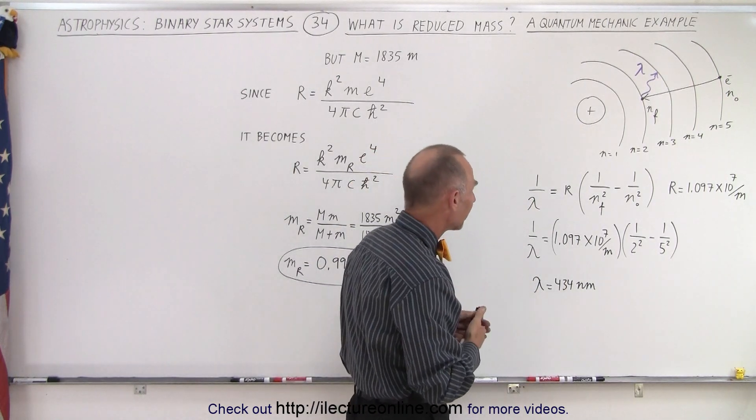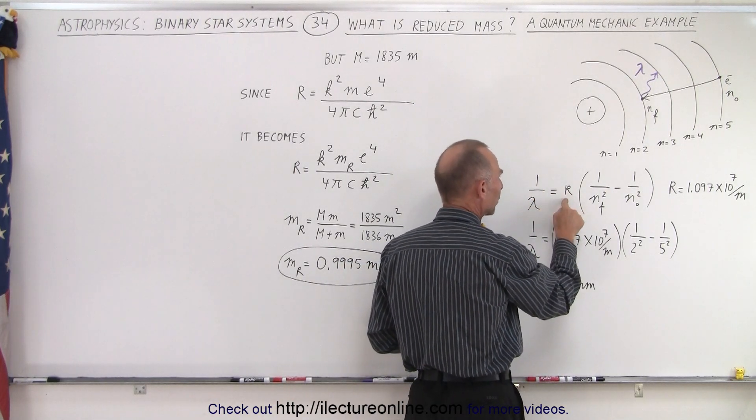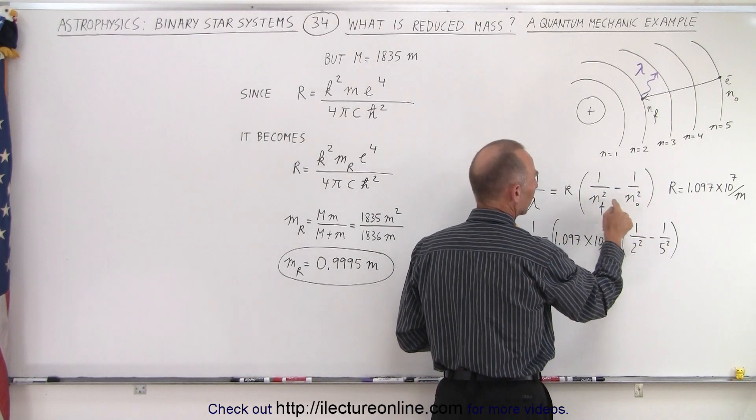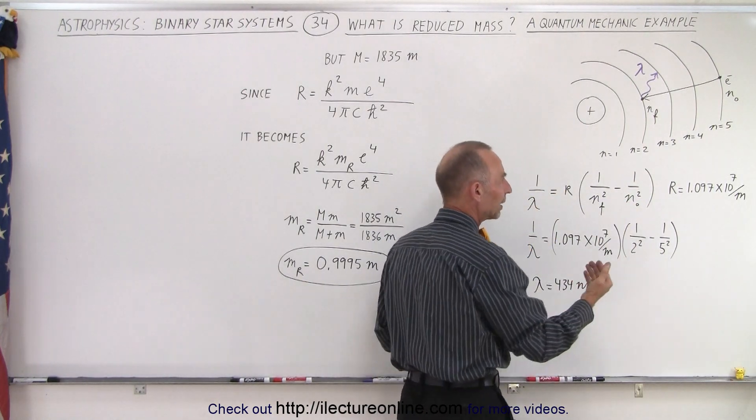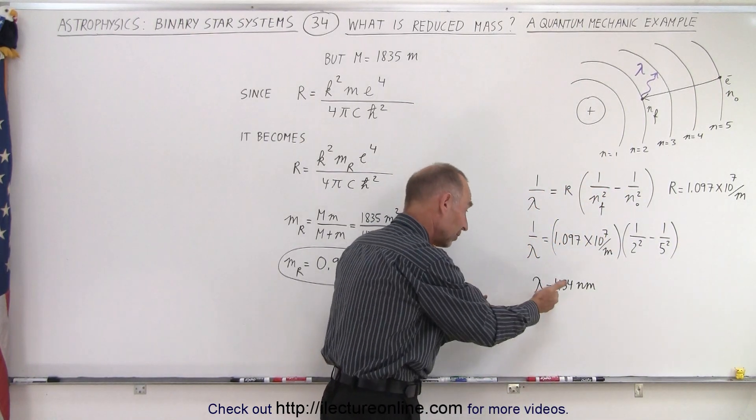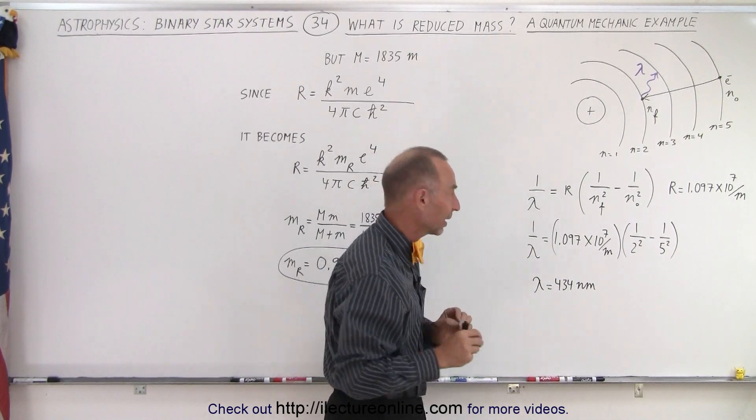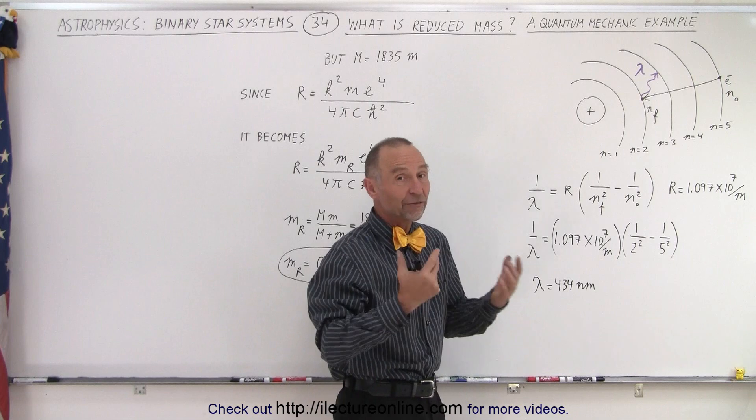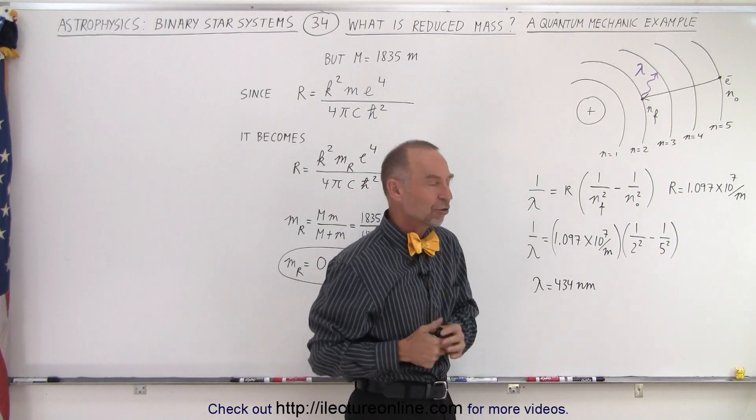This was figured out and the equation to calculate the wavelength is 1 over lambda equals the Rydberg constant times 1 over n final squared minus 1 over n initial squared. N being the orbital number of the electron. R typically is known to be 1.097 times 10 to the 7th per meter. If we do a very careful calculation of this value and a very careful measurement of the actual wavelength being emitted, we found there was a slight difference between what we calculated and what we actually measured.